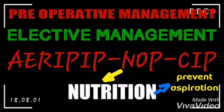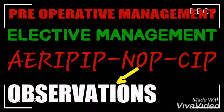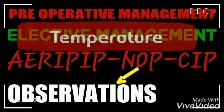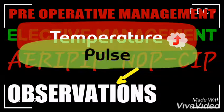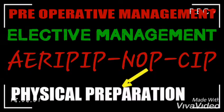The next part is Observation — these are the vitals you monitor for the patient to make sure they are within normal range. You take the temperature to check for infection if it is elevated, and you also monitor the pulse, respiration, and blood pressure.